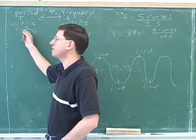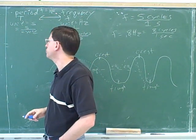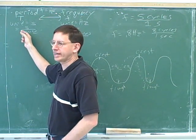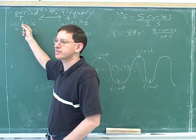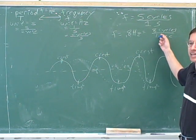What did the period tell us? The period told us how many seconds it takes to go 1 cycle. So the only difference is who we're setting at what. In the period, we imagine we're going through 1 cycle, and we measure how much time it takes.